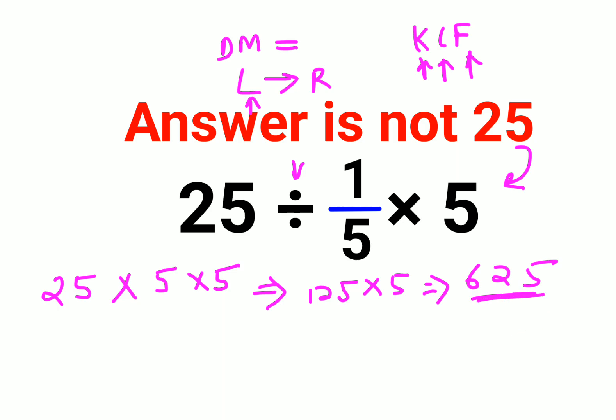Now you might be wondering when the answer will be just 25. For that, my dear friends, they had to give us this particular operation in brackets. Because in BODMAS and PEMDAS, the first thing we need to do is always do the bracket. So then eventually this gets you 25 divided by 1, which gets you the answer as 25.